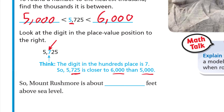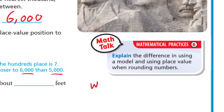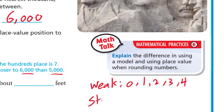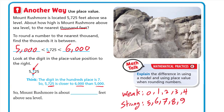The digit in the hundreds place is 7, so 5,725 is closer to 6,000 than 5,000. If the digit to the right is one of the strong digits, we round up to the bigger number; if it's a weak digit, we round down to the smaller number. The weak digits are 0, 1, 2, 3, 4 and the strong digits are 5, 6, 7, 8, 9. Since 7 is a strong digit, we round 5,000 up to 6,000 — Mount Rushmore is about 6,000 feet above sea level.